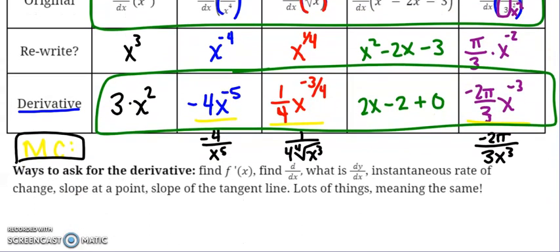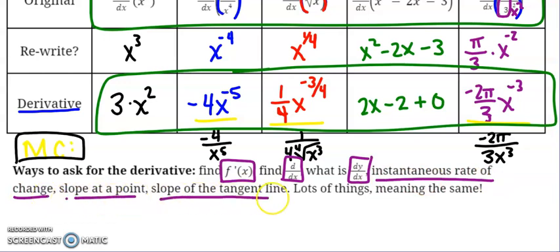Reminder, some ways to ask for the derivative. If you are asked to find f prime of x, if you are asked to find the derivative with respect to x, if you are asked what is dy/dx, that represents the change in y over the change in x at an instant, the instantaneous rate of change, the slope at a point, the slope of the tangent line, lots of things meaning the same. And what that used to mean for us is the whole limit definition. What it means now is take a shortcut when you can.